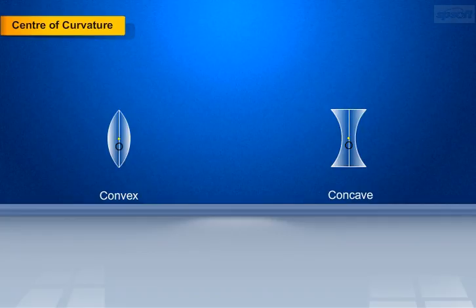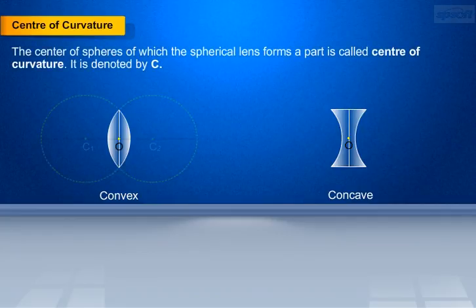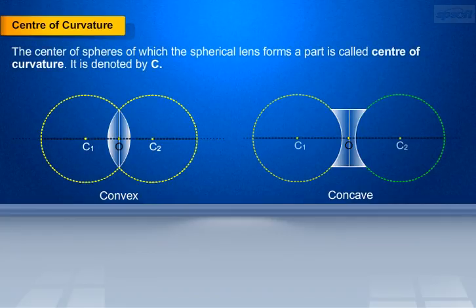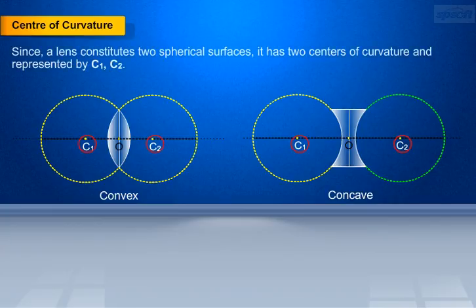Center of curvature of the lens. The center of spheres of which the spherical lens forms a part is called the center of curvature of the lens. It is denoted using the letter C. Since the lenses have two spherical surfaces, it has two centers of curvature, which are represented by C1 and C2.